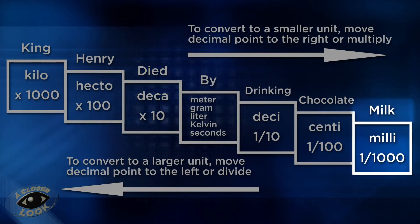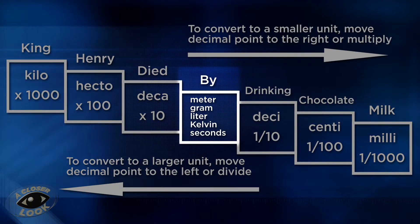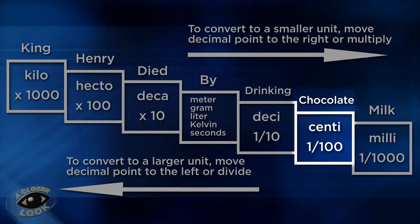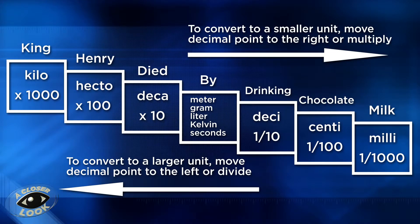If we were going from deca to milli, then we would move one, two, three, four places to the right, and that's how many places the decimal would need to move as well.